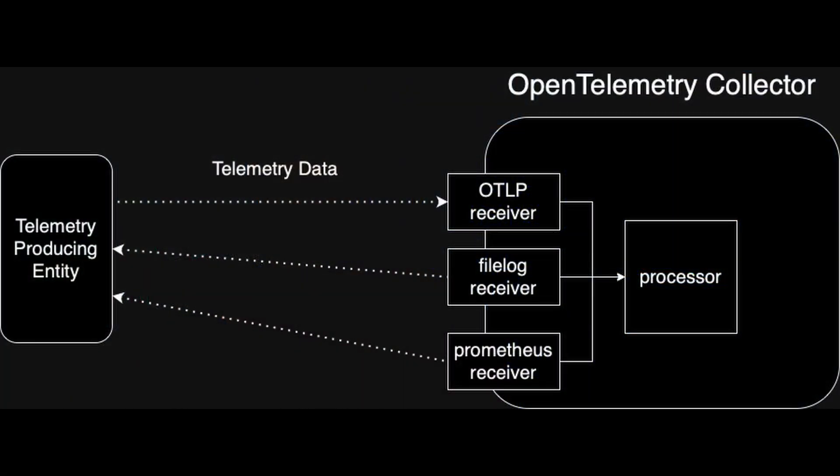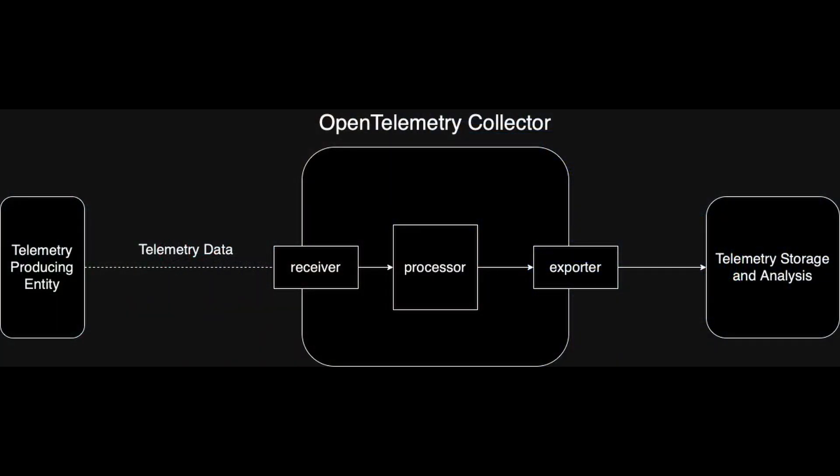Telemetry data is now inside the Collector and we've processed it into something we're happy with — so what next? We need to send it somewhere. Exporters are the way to tell the Collector how and where to send the data out of the Collector. The most common exporter is the OTLP exporter, the counterpoint to the OTLP receiver, which sends data out of the Collector in the OpenTelemetry format. Another example is the debug exporter, which takes your telemetry data and sends it out to the console — very useful for debugging. I will dive into exporters in future videos as well.